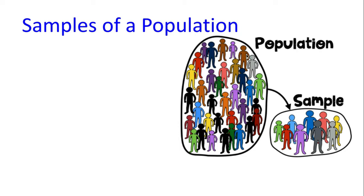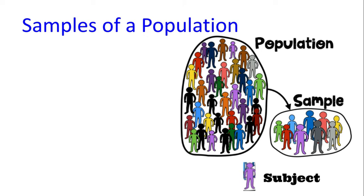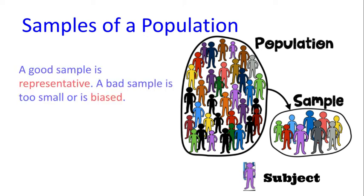Population is everyone or everything that you're interested in, and the sample is a small group. And then a subject is just one person or one thing in the population. A good sample is representative, but a bad sample is too small or is biased.